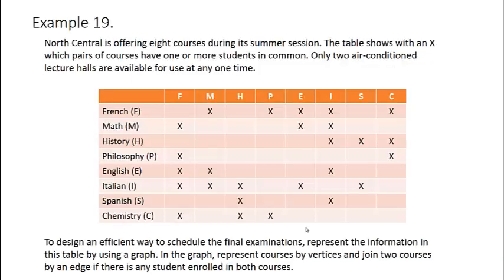Here's an example. North Central is offering eight courses during its summer session. The table below shows with an X which pairs of courses have one or more students in common. Only two air-conditioned lecture halls are available for use at any one time. So to design an efficient way to schedule the final examinations, we want to represent the information in this table using a graph. And the graph will represent the courses by vertices and join two courses by an edge if there is any student enrolled in both courses. Keep in mind, this is telling us the fact that we have an X here in this block tells us there is a student enrolled in both French and mathematics. Therefore, we cannot schedule the French exam and the math exam at the same time, since that student obviously can't take both exams at the same time.